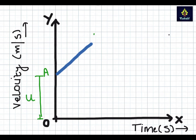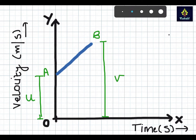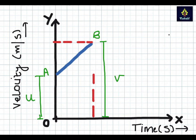Now the object reaches point B and here the final velocity is V. So that means that this whole distance from the base is V. Now what I will do is I will make perpendiculars from B on my y axis and the x axis.